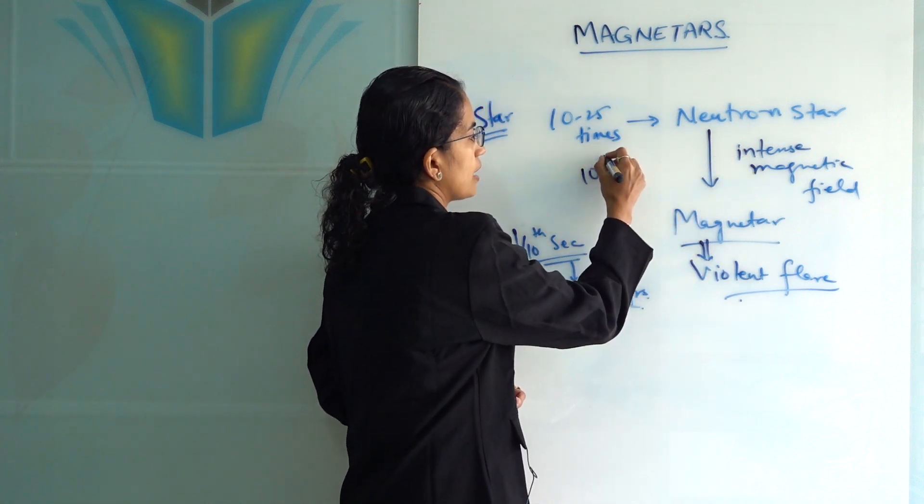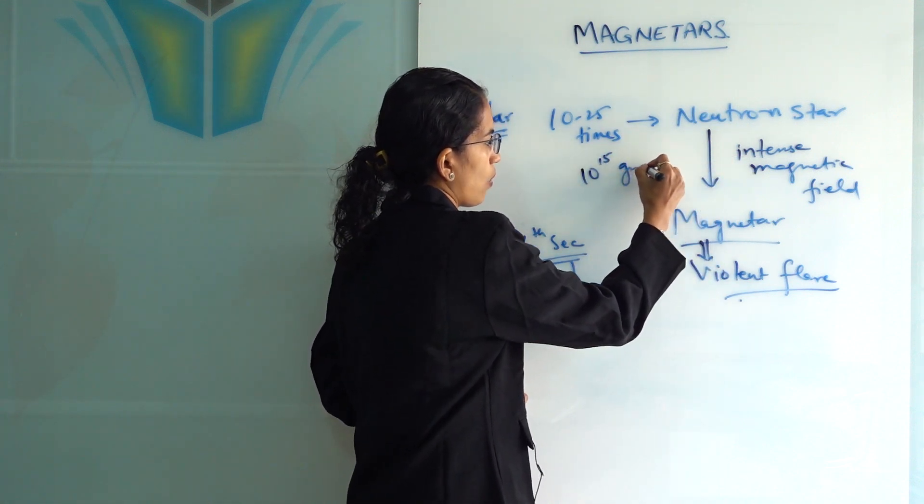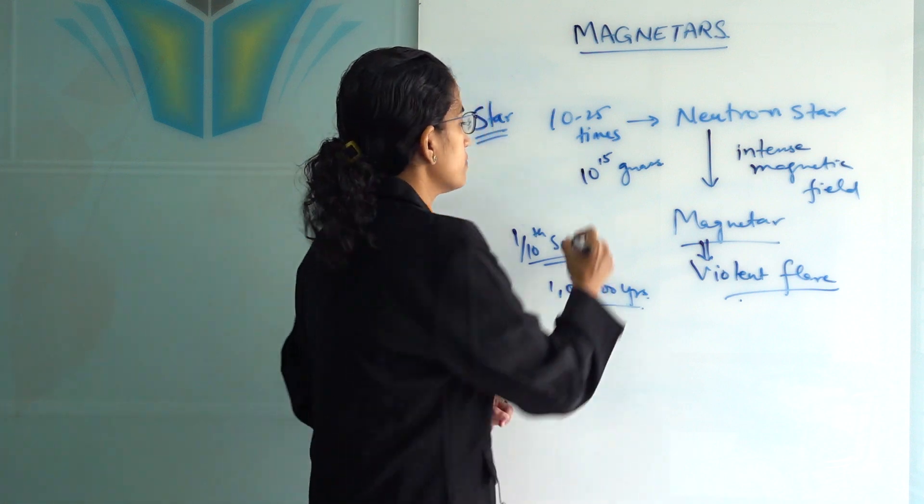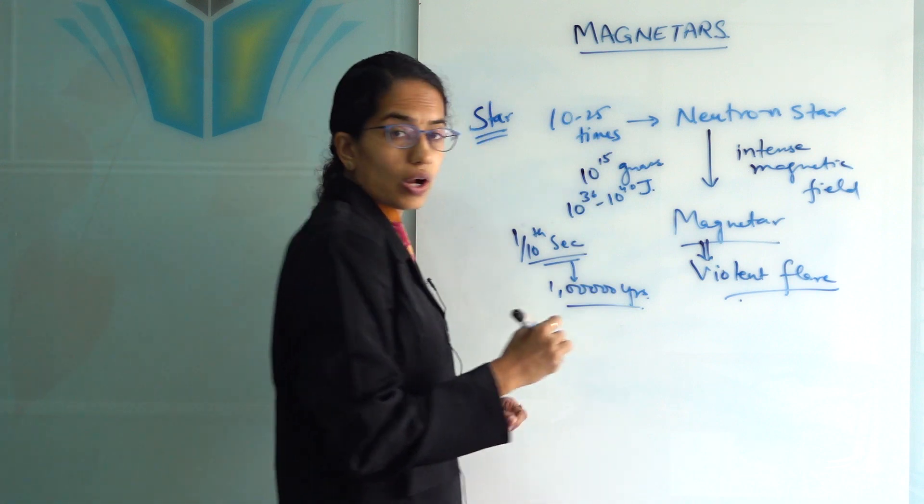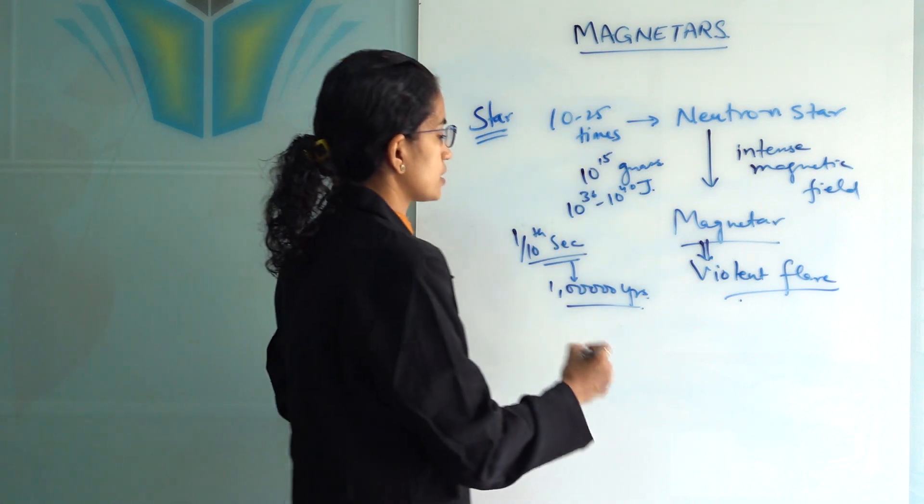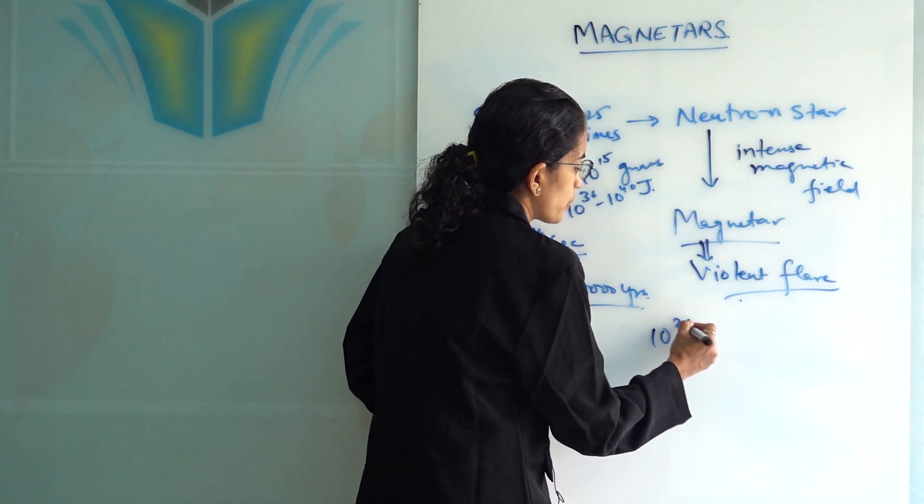And a luminosity which is around 10 raised to power 36 to 10 raised to power 40 joules, in contrast to our sun's luminosity which is 10 raised to power 26 joules, nearly 10 raised to power 11 joules higher than the sun's luminosity.